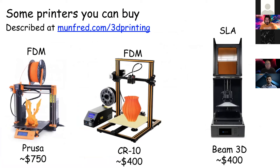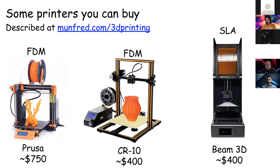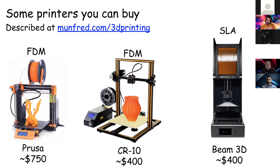This is how a printer that you can buy looks like, and that is the actual price tag. At Caltech in the library we have these two extrusion printers. We don't have resin printers in the library, but I bought one and tucked it away in a fume hood in the lab because this one is a little messier. These are extremely affordable — only a few hundred dollars and you can buy a really nice machine.